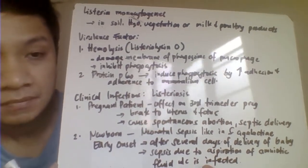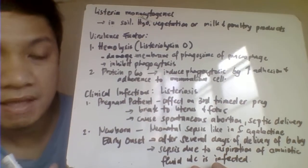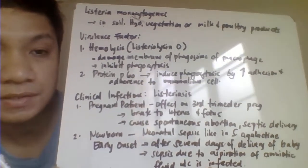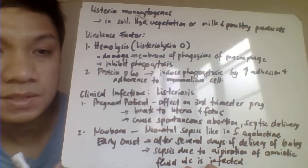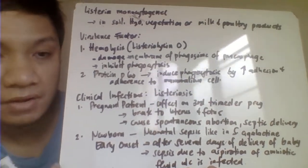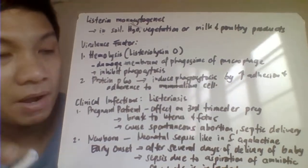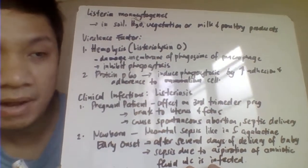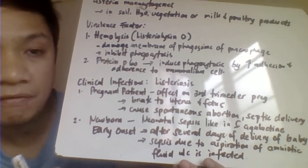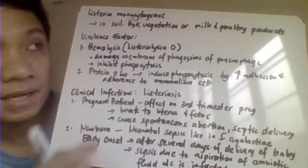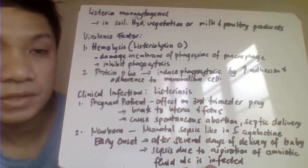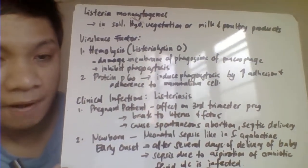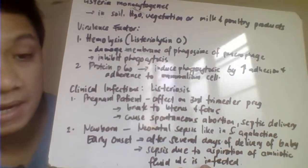Listeriolysin O damages the phagosome membrane of the macrophage, preventing phagocytosis by disrupting or destroying the phagocyte's phagosome membrane — rendering the macrophage unable to phagocytose bacteria. Another virulence factor is protein P60, which increases the adherence or attachment of bacteria to mammalian cells to cause damage.